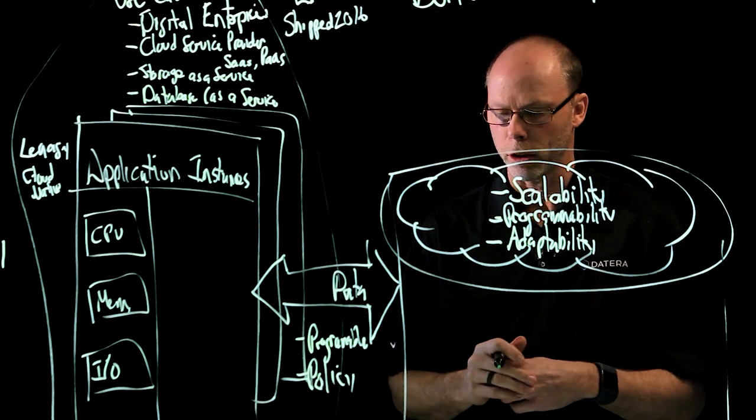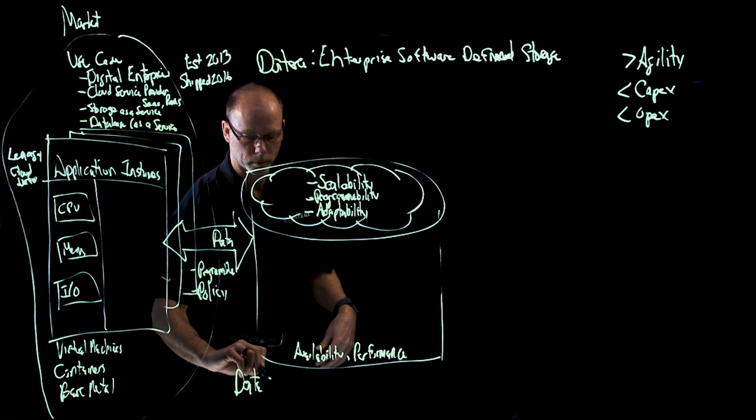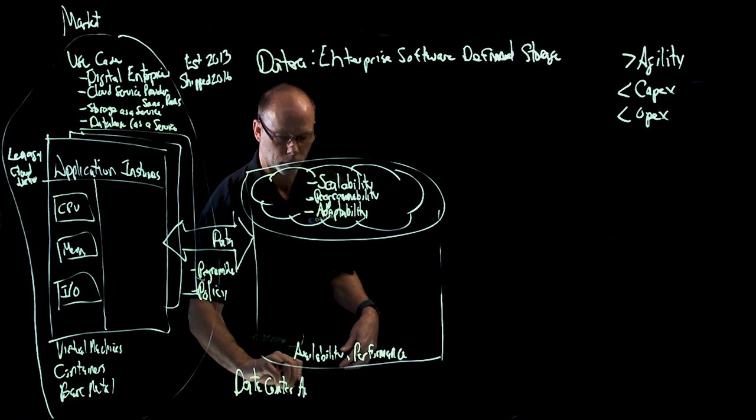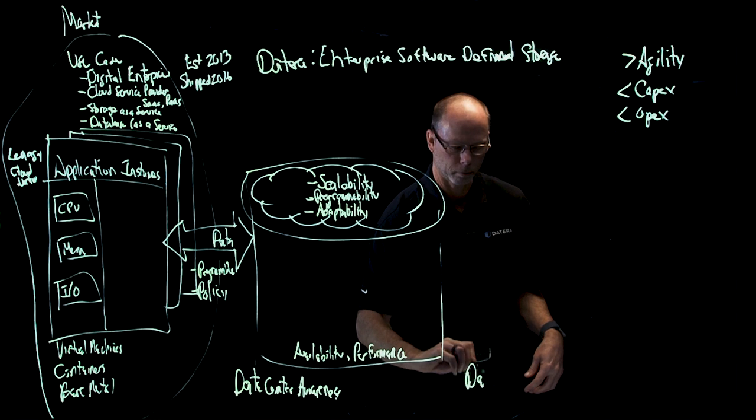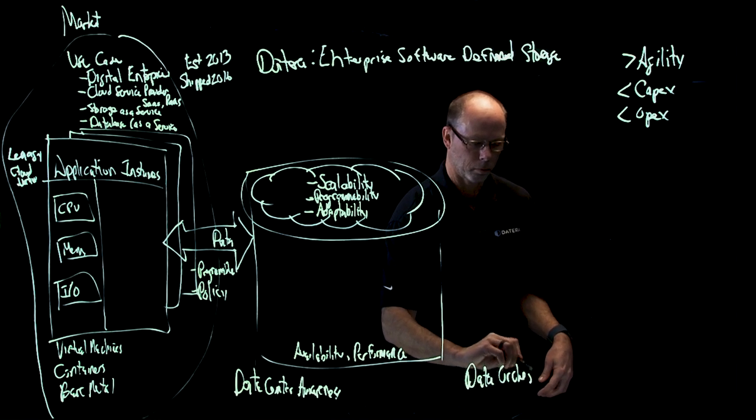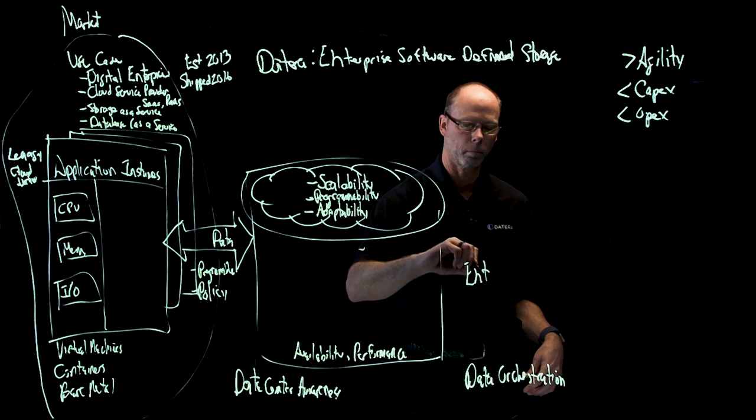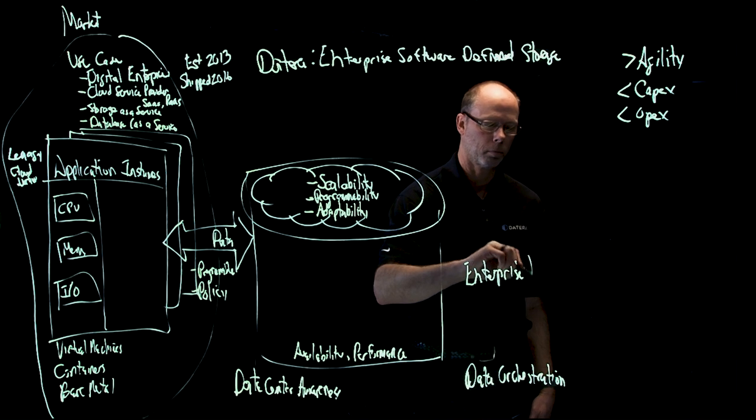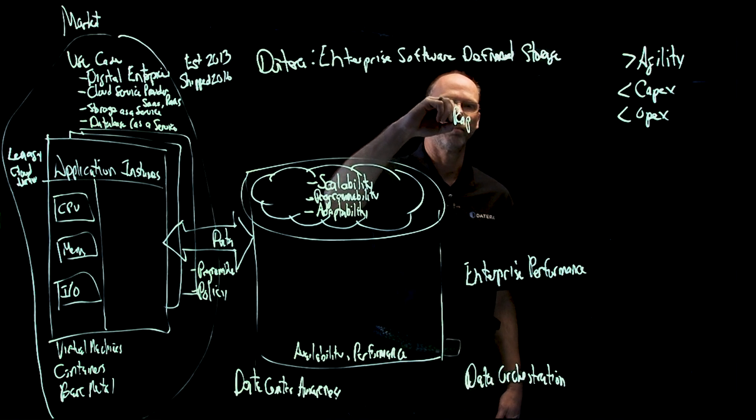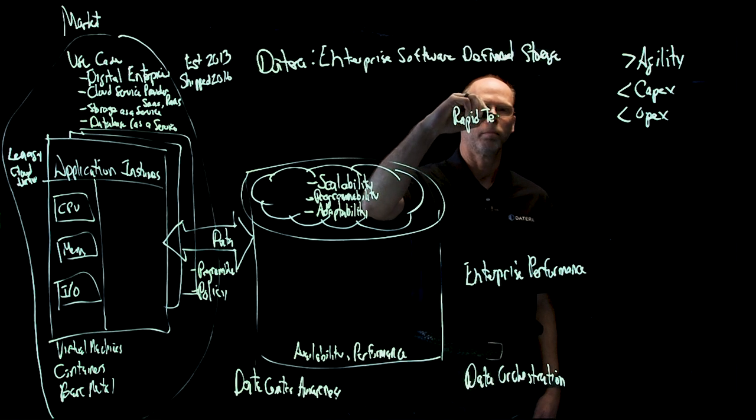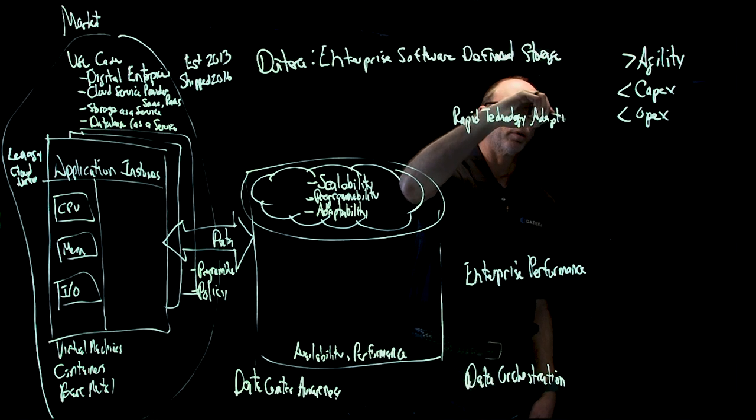Now let's talk about the five tenets of the system. First is data orchestration or data center awareness. Next is data orchestration. After that is enterprise performance. Fourth is rapid technology adoption. And finally, we have predictive operations.